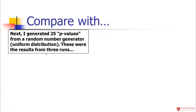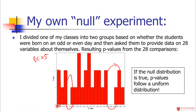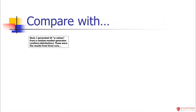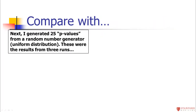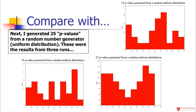I got two p-values between 0 and 0.05 — two statistically significant results. When I generate 25 random numbers from a uniform distribution, the pattern looks similar, confirming that if the null hypothesis is true, you expect p-values anywhere from 0 to 1 with equal probability. Values between 0 and 0.05 are not surprising — they're expected. It would actually be odd if you didn't get some statistically significant p-values at the 0.05 level when you do so many tests.